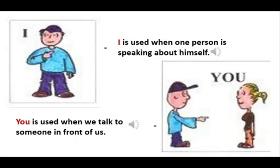Now let us have a look at these pronouns with some examples. 'I' is used when one person is speaking about himself or herself — we use 'I' when we talk about ourselves. For example, 'Ocean is teaching English' or 'I am teaching English.' So instead of Ocean, I have used 'I.' Ocean is a noun, and 'I' is replacing that noun.